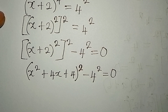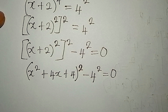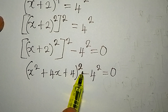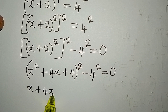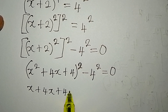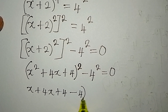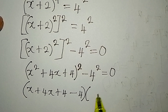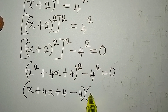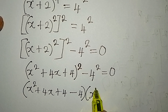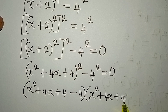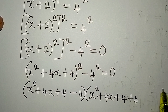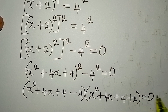Now we apply the difference of two squares. The outer square is removed. The first bracket gives us x squared plus 4x plus 4 minus 4, and the second bracket gives us x squared plus 4x plus 4 plus 4, because the negative turns to positive. Everything equals zero.